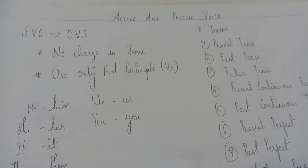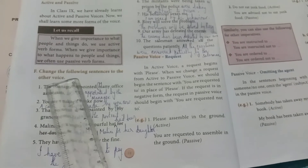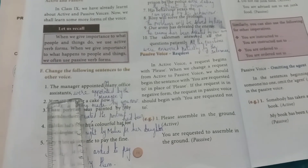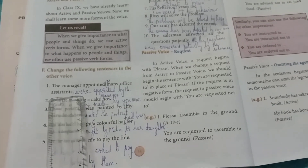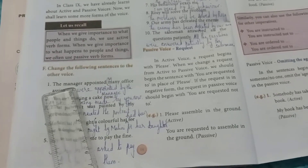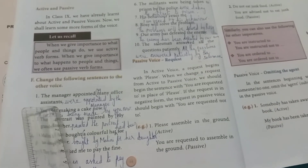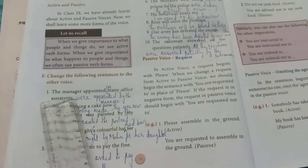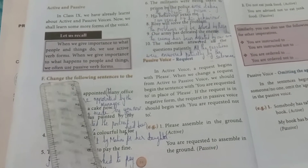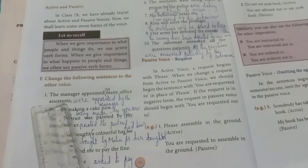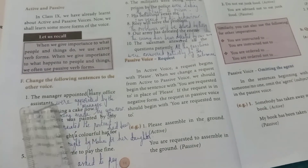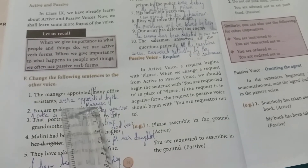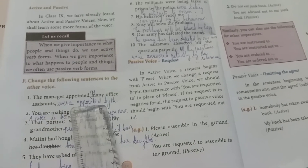Now we will move on to the exercise. Change the following sentences to the other voice. First question: 'The manager appointed many office assistants.' Subject is 'the manager,' object is 'many office assistants,' and verb is 'appointed' — past tense. Since 'assistants' is plural, we use 'were.' Answer: 'Many office assistants were appointed by the manager.'